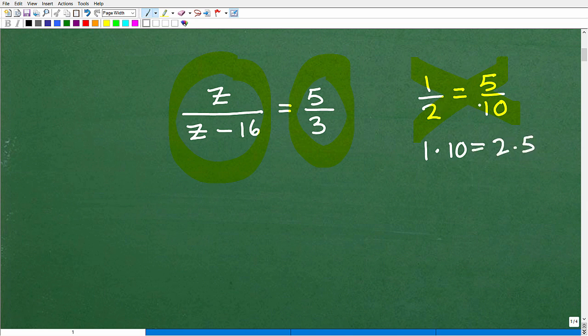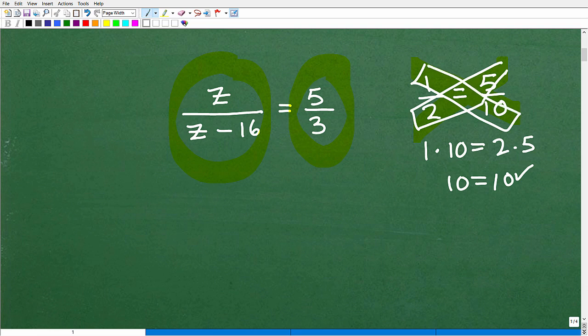So 1 times 10 is 10. 2 times 5 is 10. And there you go. So when we're dealing with proportions, you want to keep in mind the cross product. That's how we solve things.